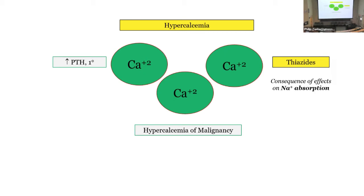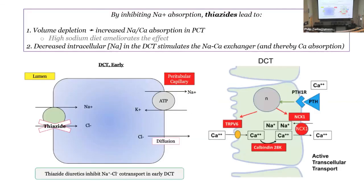Now thiazide diuretics: they block sodium chloride co-transport, decreasing sodium. The body responds with aldosterone release, trying to absorb sodium. In the proximal convoluted tubule, sodium and calcium are absorbed together via paracellular channels — so by increasing sodium resorption as a counter-regulatory response, you're also increasing calcium resorption. That's the principal mechanism of hypercalcemia associated with thiazides.